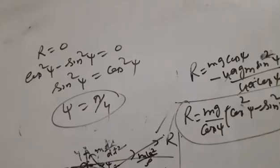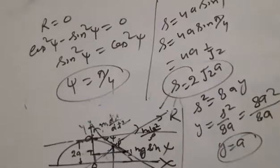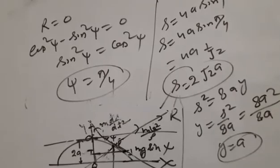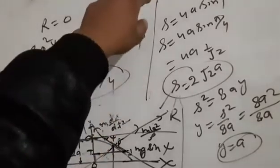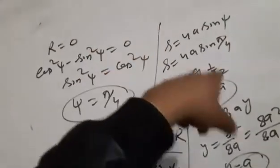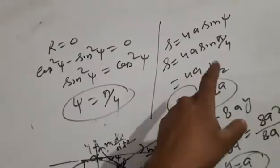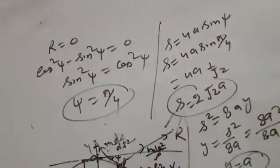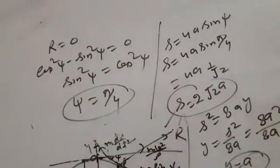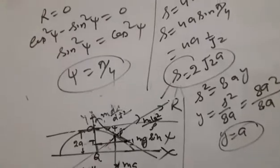This condition was already established. At ψ = π/4, using s = 4a·sinψ, we substitute ψ = π/4: s = 4a·sin(π/4) = 4a·(1/√2) = 2√2·a. So s = 2√2·a at the point where the particle leaves the cycloid.